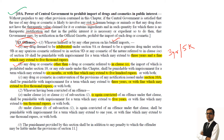Clause B says that any drug or cosmetic other than a drug or cosmetic referred to in clause A, the import of which is prohibited under section 10 or any rule made under this chapter, shall be punishable with imprisonment for a term which may extend to 6 months and with a fine which may extend to 500 rupees. Clause C covers any drug or cosmetic in contravention of any notification issued under section 10A, which shall be punishable with imprisonment for a term which may extend to 3 years or with a fine which may extend to 5,000 rupees — so for a government rule, the fine is higher.